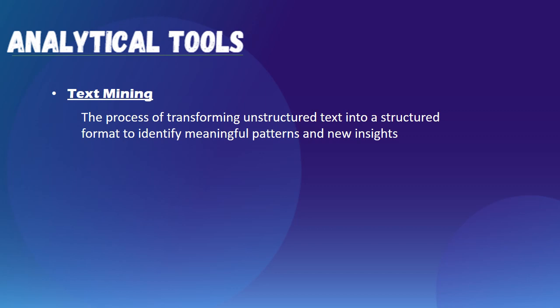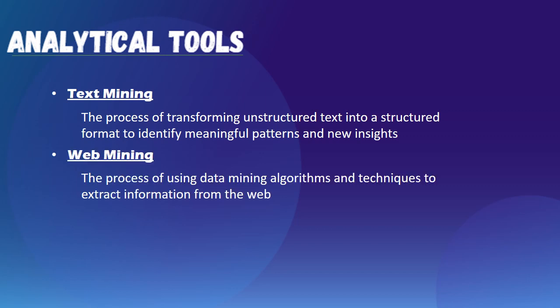Next is text mining. It is a process of transforming unstructured text into a structured format to identify meaningful patterns and new insights. It consists of methods and technologies like keyword-based technology, where the input is based on a selection of keywords in the text that are filtered as a series of characters. Web mining, on the other hand, is the process of using data mining algorithms and techniques to extract information from the web. This information is obtained from web content, services, server logs, and hyperlinks.